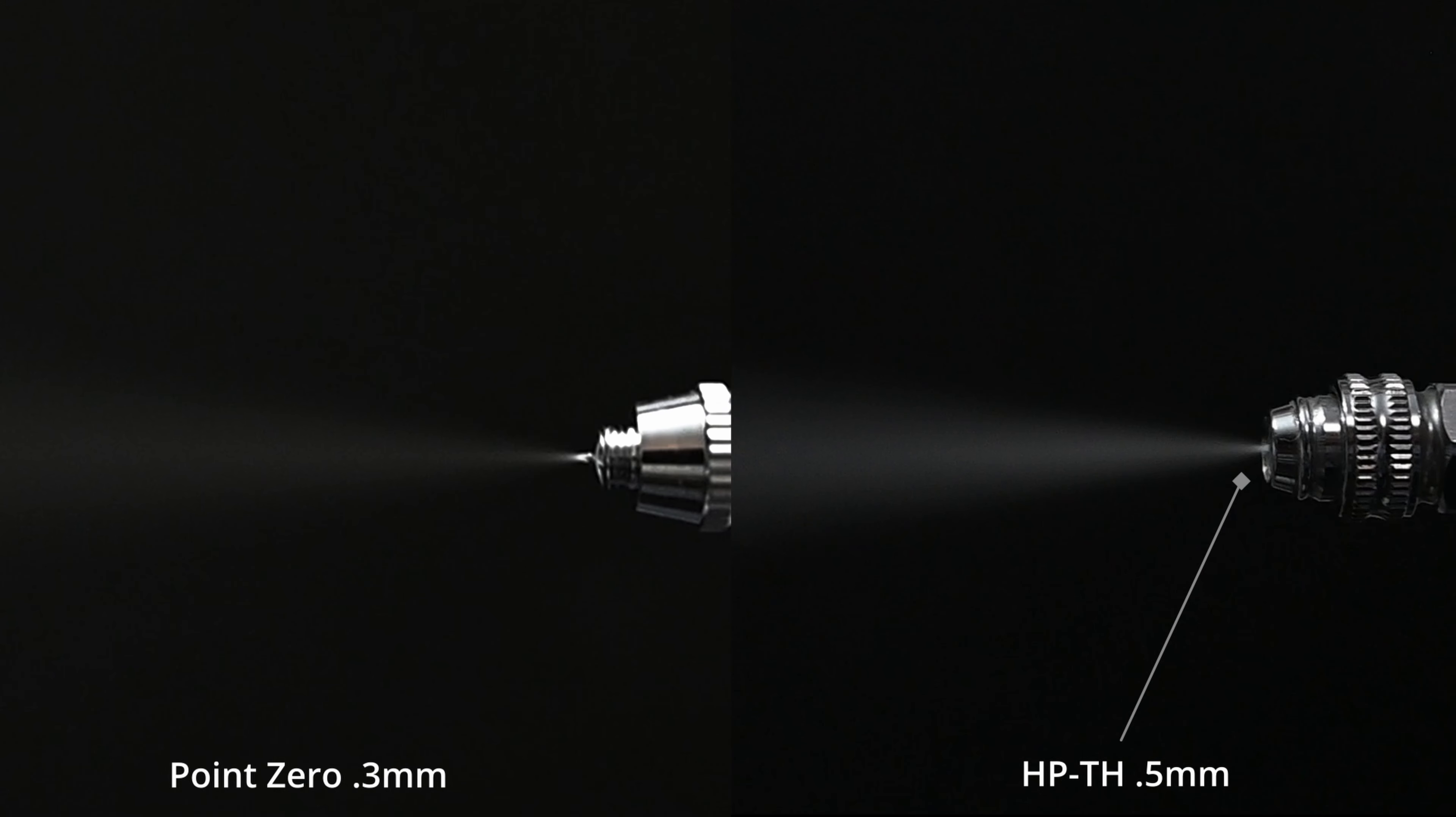The HPTH on the right side of the screen is a different story because the needle is retracted within the nozzle. And since that needle is kind of dull and rounded off you don't get that very sharp spray pattern at the very beginning of the spray.